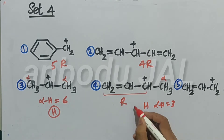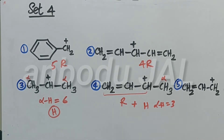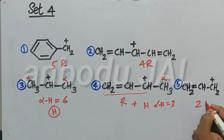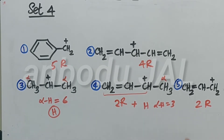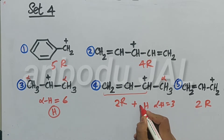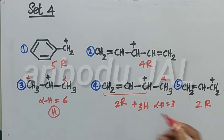Here, resonance plus hyperconjugation. In this carbocation, two resonance structures only. Here, two resonance structures plus three hyperconjugation structures. Here also, two resonance structures and three hyperconjugation structures.